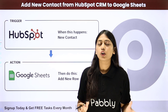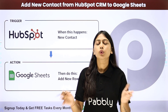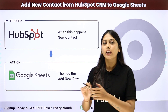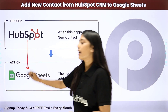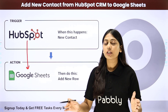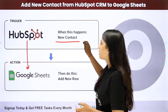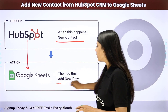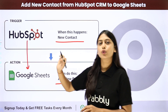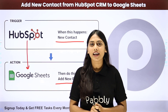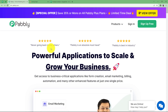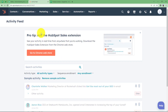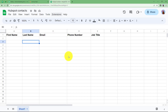Rather than creating contacts at two different places, you can create an automation with the help of Fably Connect where you will be able to integrate both these applications. In this automation, our trigger is going to be new contact in HubSpot and our action will be to add a new row for that contact detail in Google Sheets. Let us learn how to add all the HubSpot contacts you ever create into your Google Sheet.